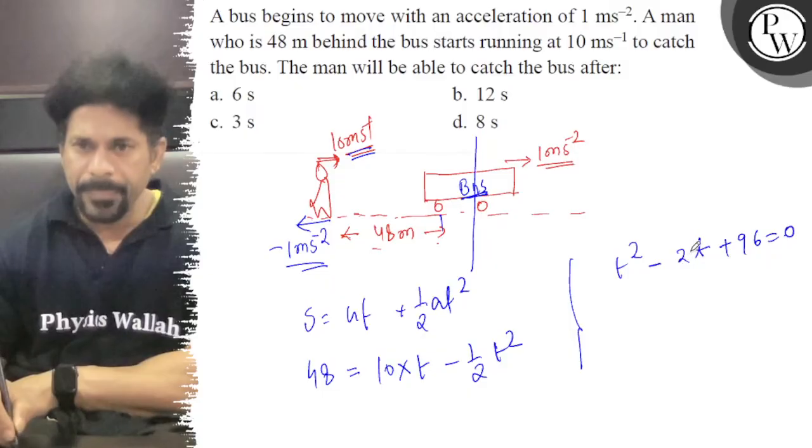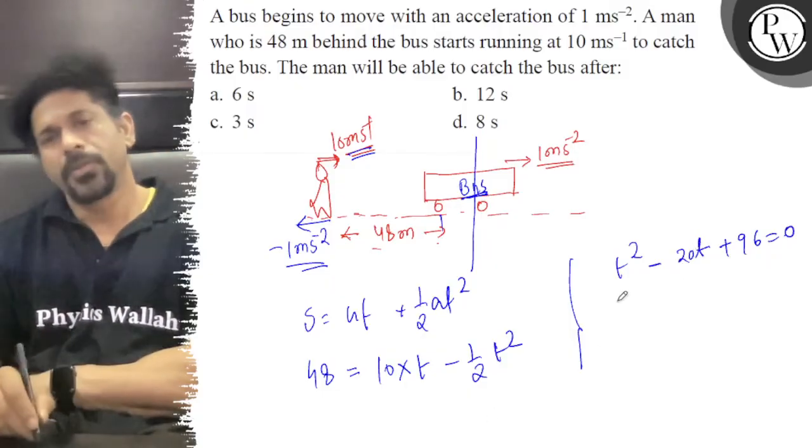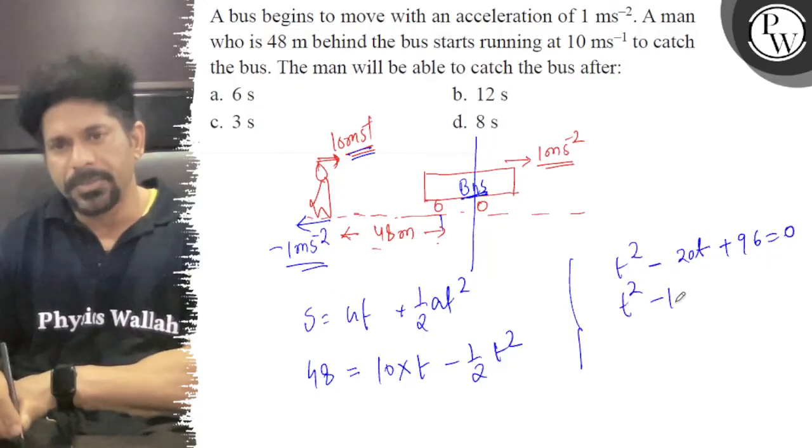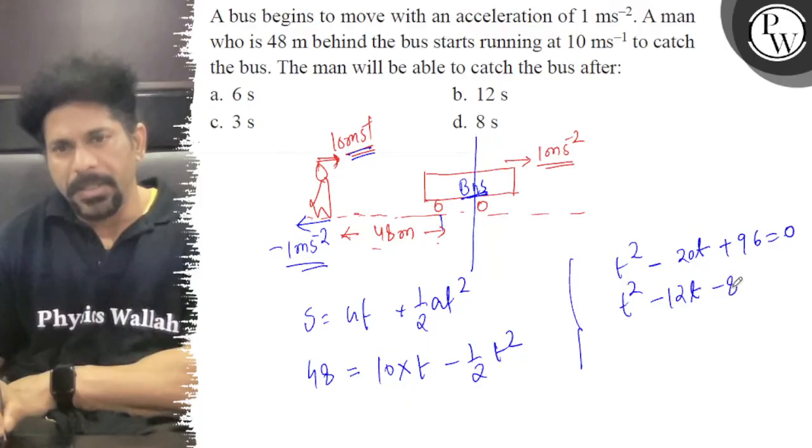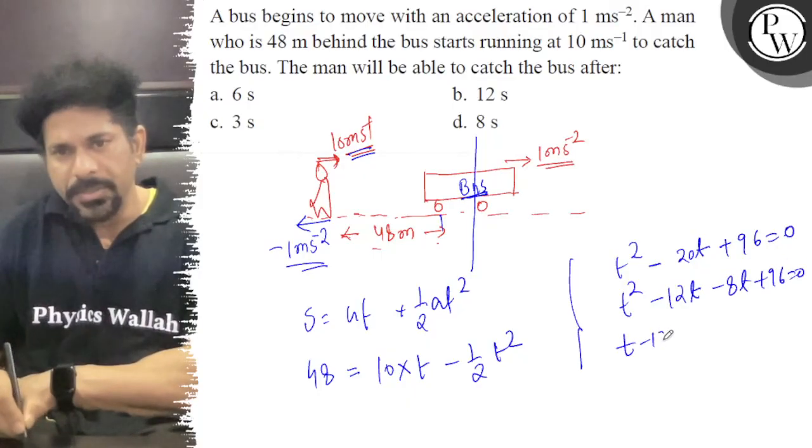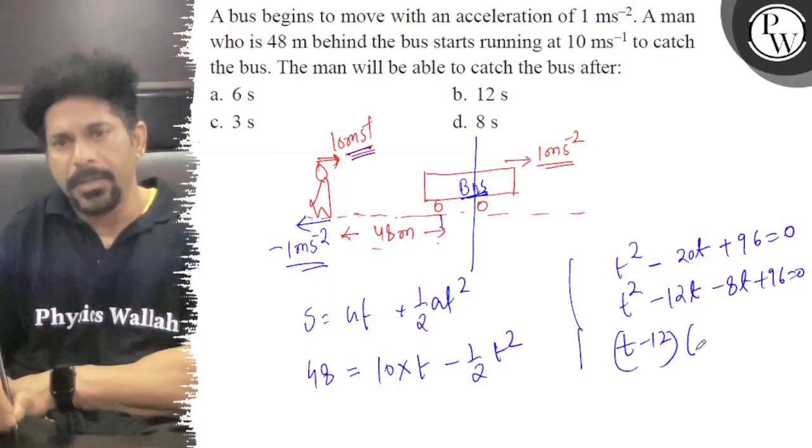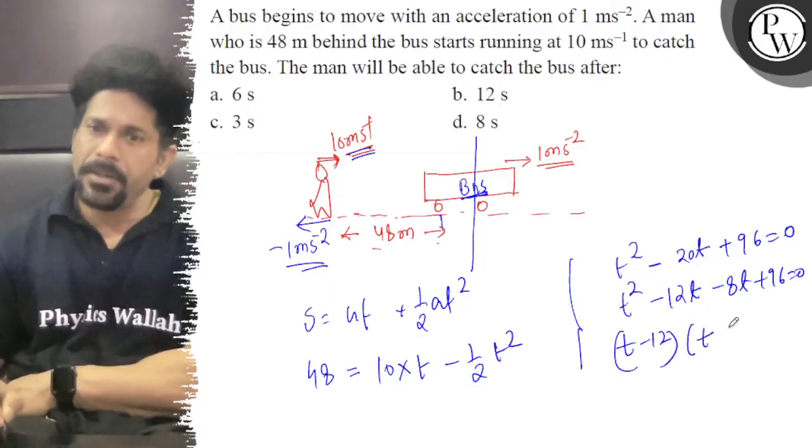Factoring this equation: t squared minus 12t minus 8t plus 96 equals 0. So t minus 12 and t minus 8.